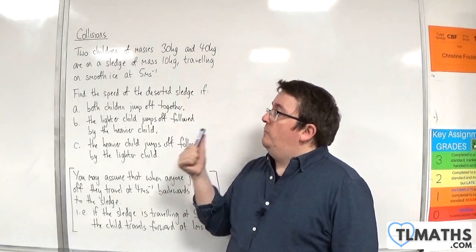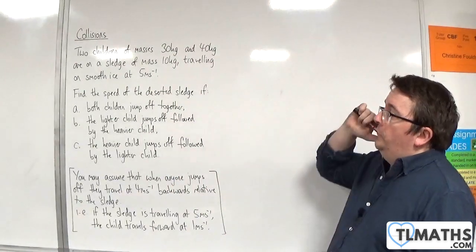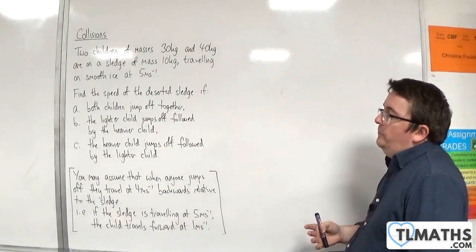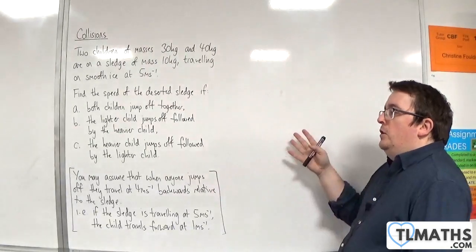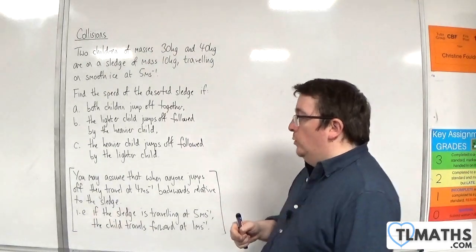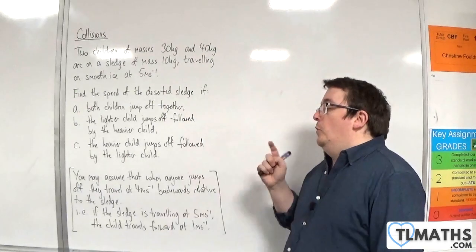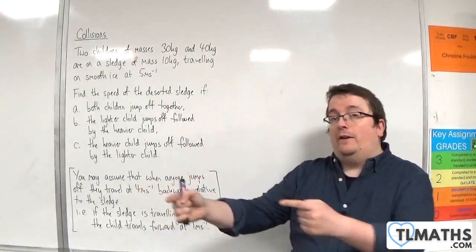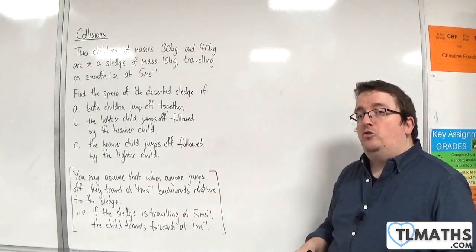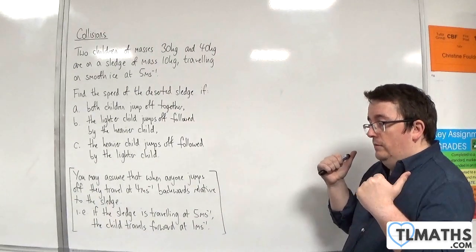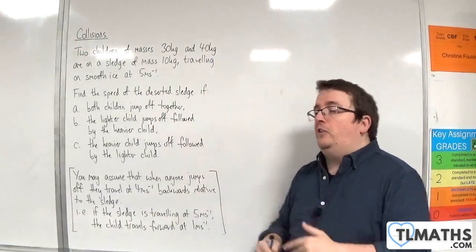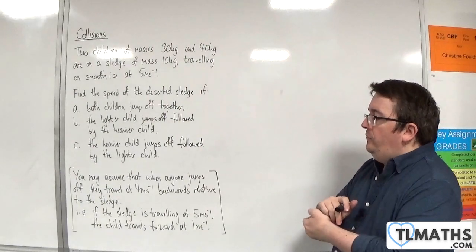The first scenario is if both children jump off together. The key thing here is we may assume that when anyone jumps off, they travel at 4 metres per second backwards relative to the sledge. So if the sledge is travelling at 5 metres per second, the child that jumped off will be travelling in the same direction at 1 metre per second — you subtract 4 metres per second.